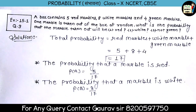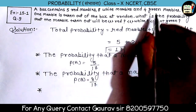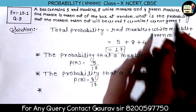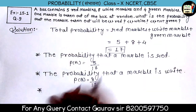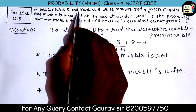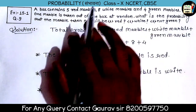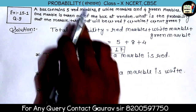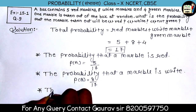Moving ahead, students — the last probability is 'not green,' meaning the marble should not be green. If green is not coming, then which ones come? White or red will come, because the options are red, white, and green — but green is cancelled. So what remains is white and red: 5 plus 8 = 13.